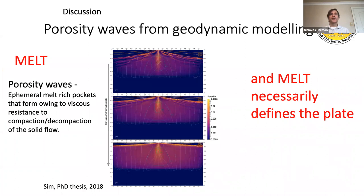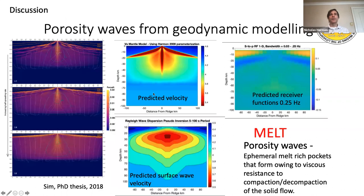Going back to the question of what can explain everything: the sub-solidus possibilities probably don't explain all our observations, so we're probably left with melt. This is exciting but also suggests we have more work to do, because we need to incorporate the effects of melt migration into our models of plate tectonics. This is just a nice model from Joyce Sim showing porosity waves in the mid-ocean ridge, and future work we're doing is to model these and understand what the geophysical images would look like.